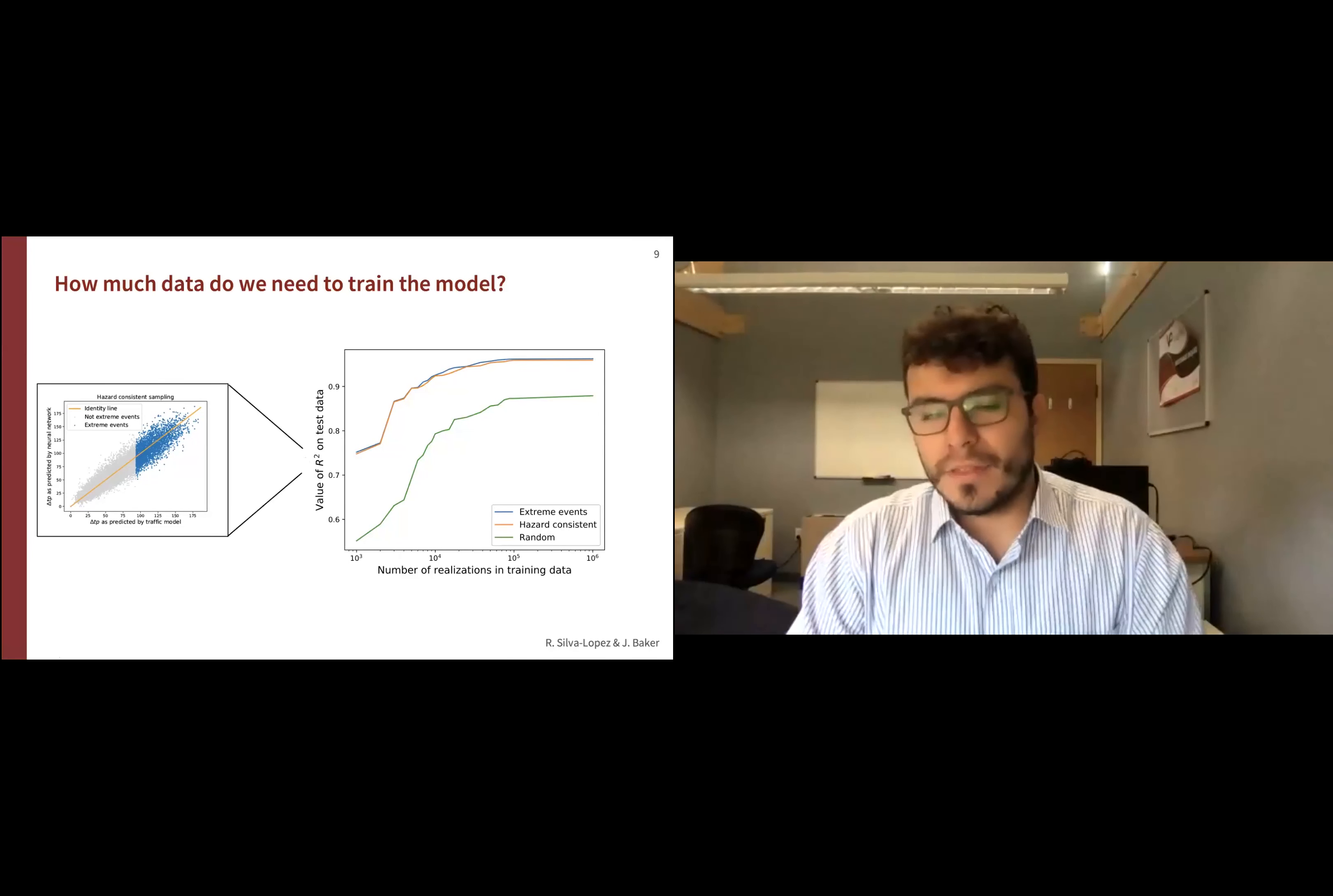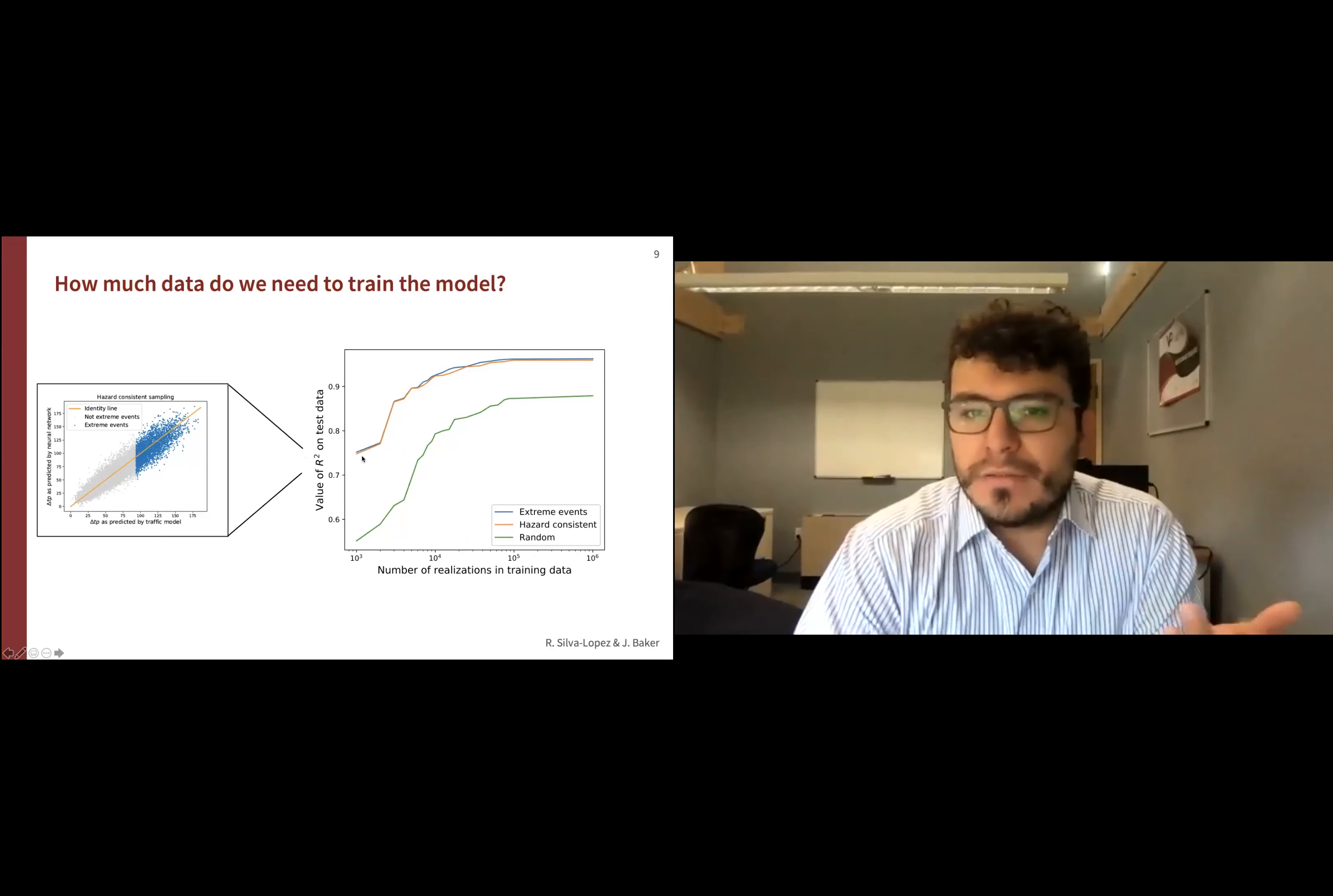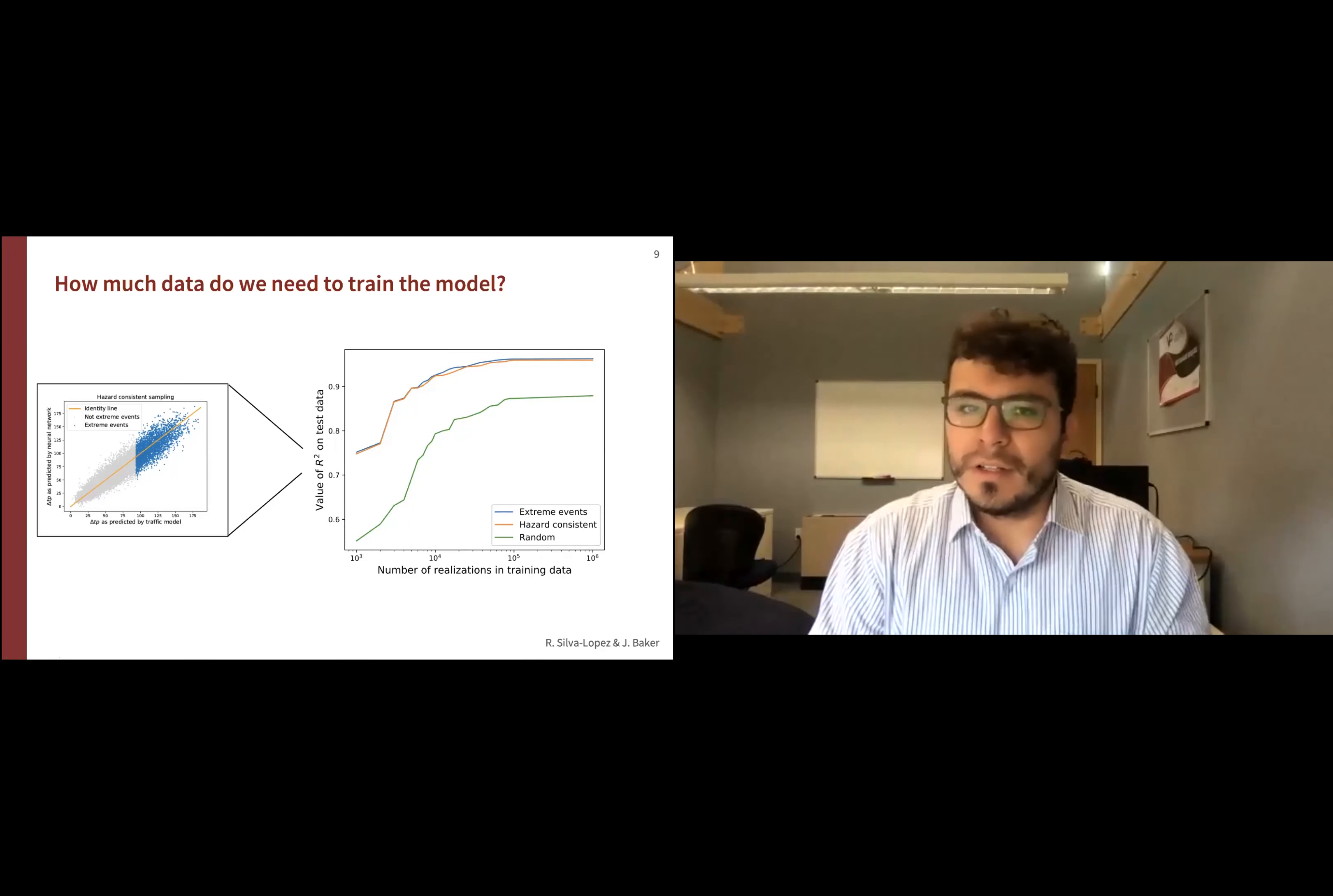Here we're showing the dependency of accuracy on the number of realizations in training data. We observed that with just 1,000 realizations for extreme events and hazard-consistent sampling, the R-squared value of the model is already over 0.75. For 10,000, it's already almost reached the plateau. This is actually very powerful, because the number of scenarios we have for our test bed was 2,000 realizations. Using half of those realizations from one analysis only, you already get 0.75 for the neural network. But if you run it five times, which I do during my PhD on a daily basis, you already have enough data to calibrate your network, for which you will not need to run any other model again.